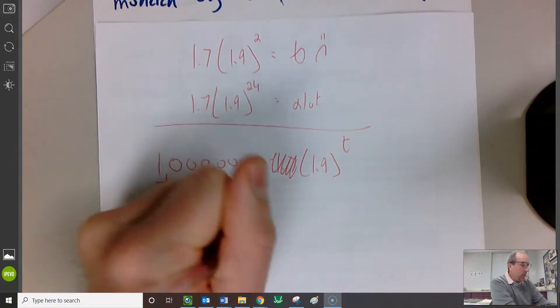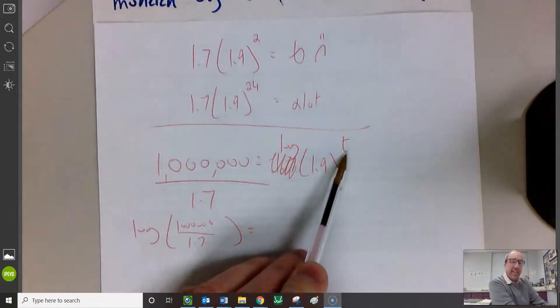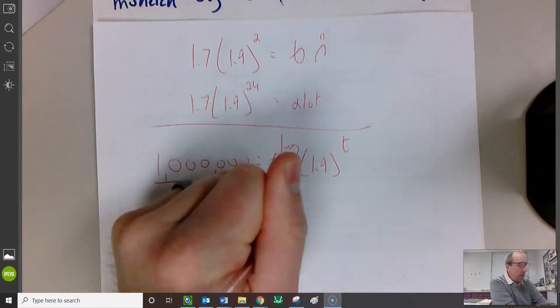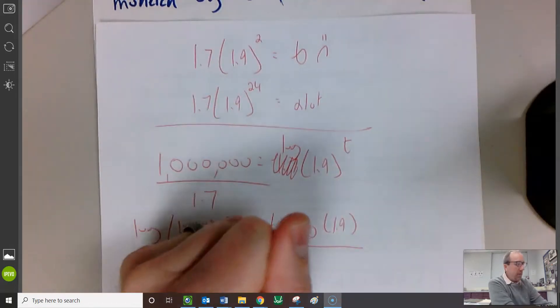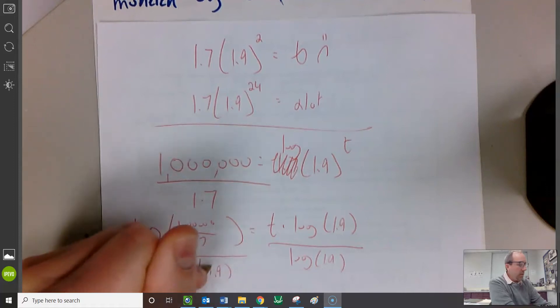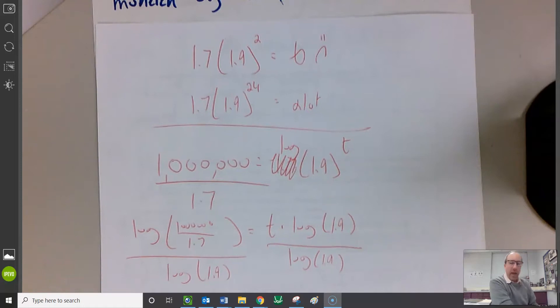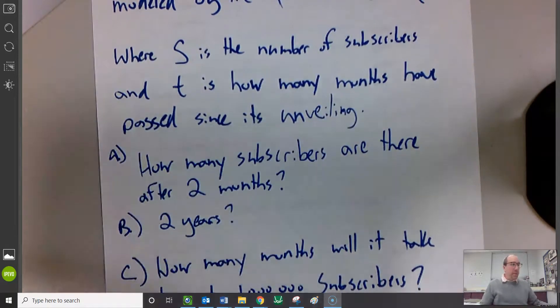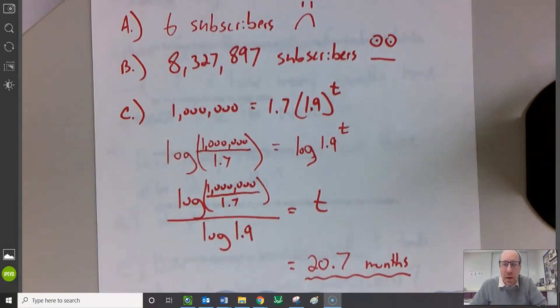I'm going to take the log of both sides. Log of 1 million over 1.7 equals, if I take the log of 1.9 to the T, that T that's an exponent can be multiplied out front. T times log of 1.9. Finally, we would just divide by log of 1.9. This is the exact answer. But then when we jam it into our calculator, we would get what T is. And that's how many months has passed. Right about at 20.7 months. Not bad.